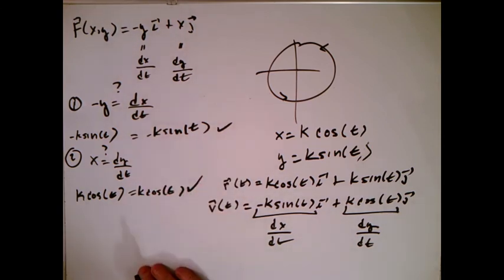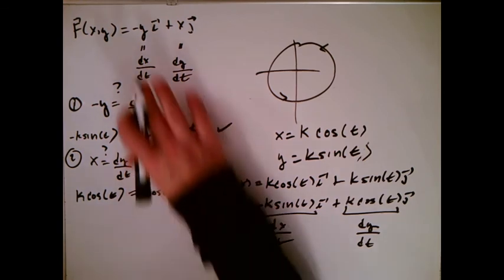And so what we get is not only is it going around the right kind of path, but it's actually going along so that the velocity is actually what it's supposed to be.